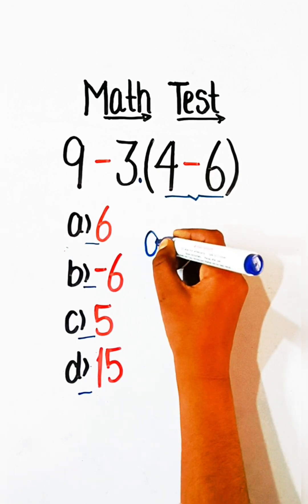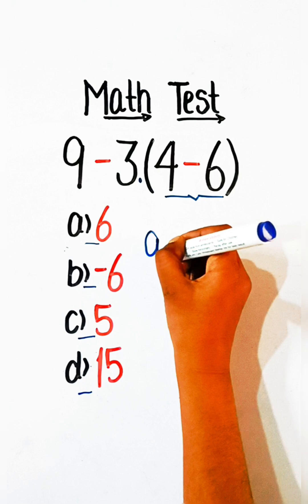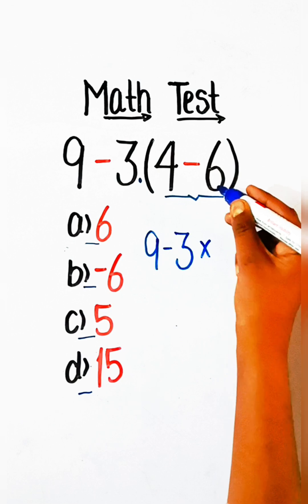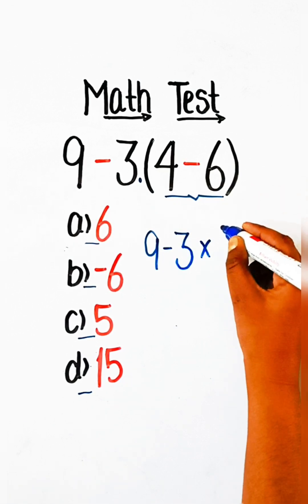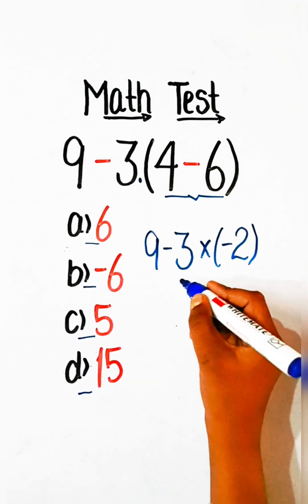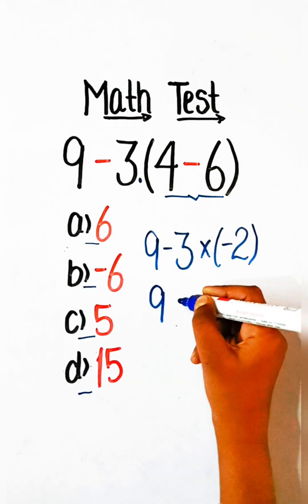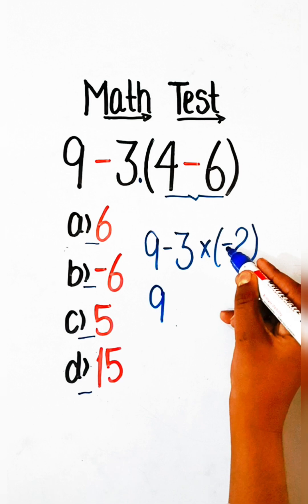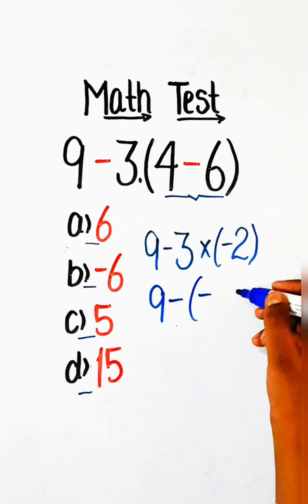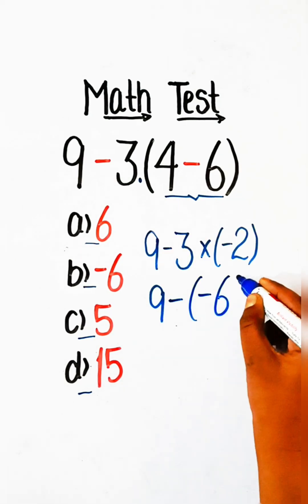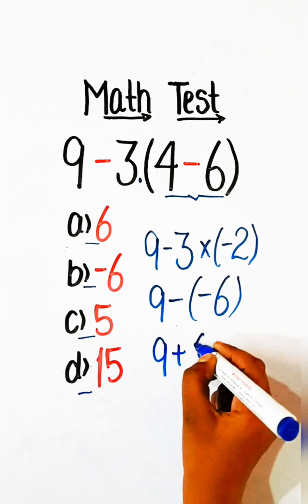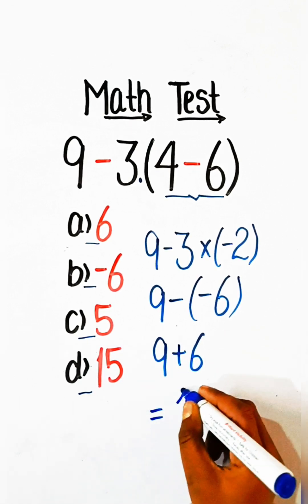We will write 9 minus 3 as it is, multiply — 4 minus 6 is minus 2. So 9 minus 3 multiply by minus 2: minus times minus is plus, so 9 plus 6 equals 15.